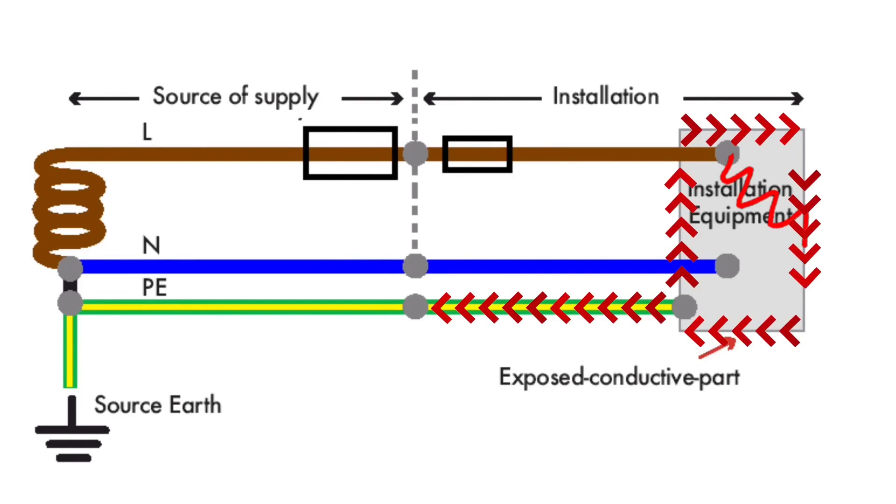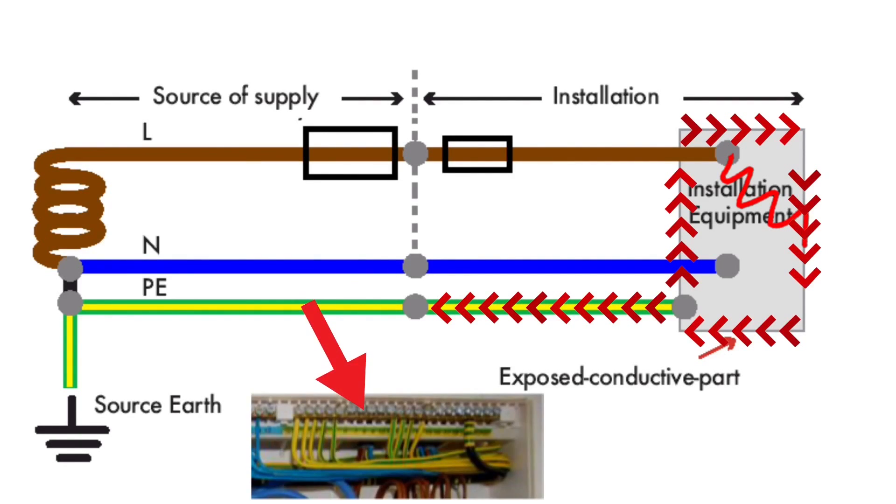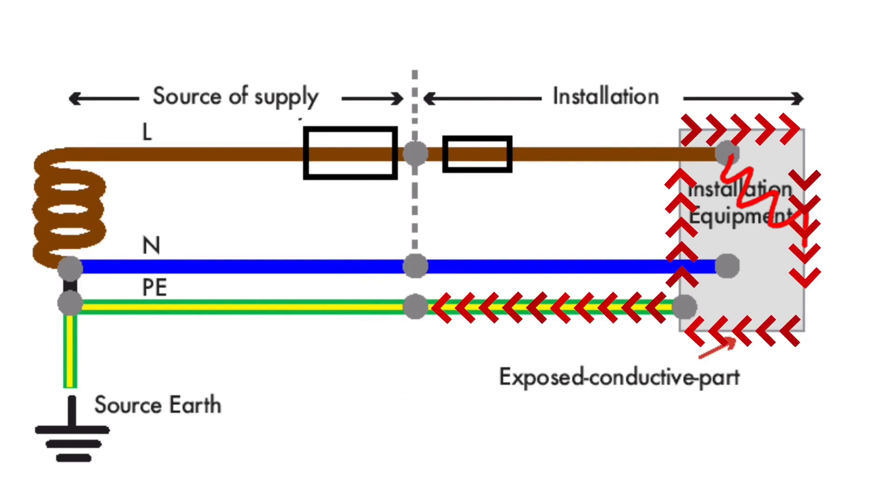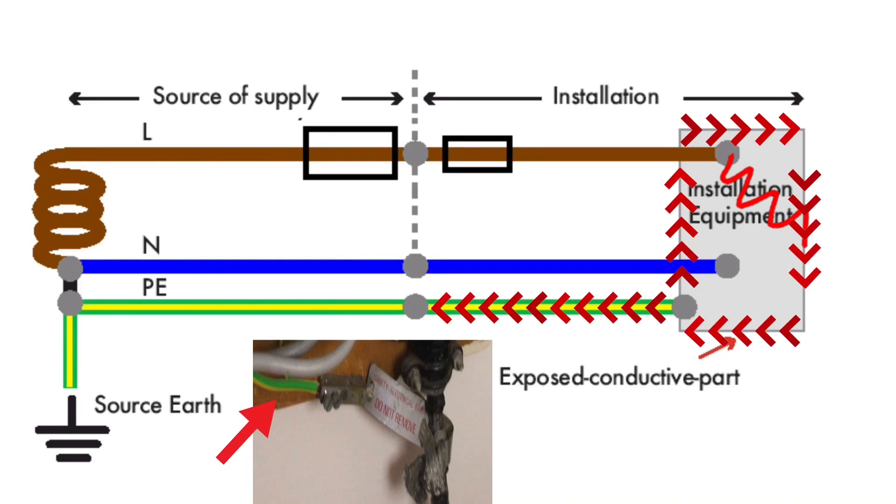This goes back to the earth terminal situated within the consumers unit which would become live. This is connected to the incoming earthing conductor which comes in with the double insulated meter towels. This earthing conductor becomes live.